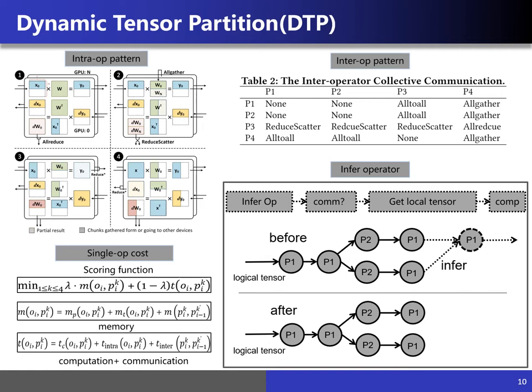Before the virtual machine generates the computational instruction for each operator, the operator interpreter will dynamically infer the partition strategy of the current operator by giving each pattern a score. The scoring strategy is to trade off communication and memory use, and then dynamically adjust the tensor partition strategy of the current operator according to the scoring objective function as shown in the figure. We change the original strategy based on the heuristic inference.